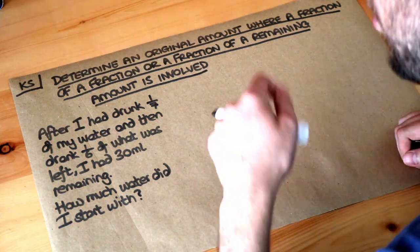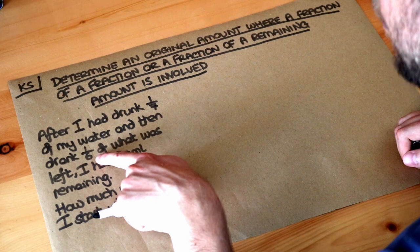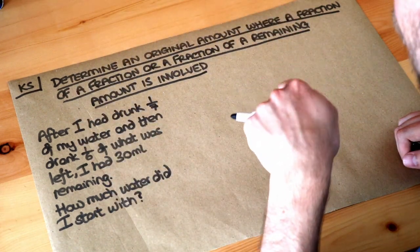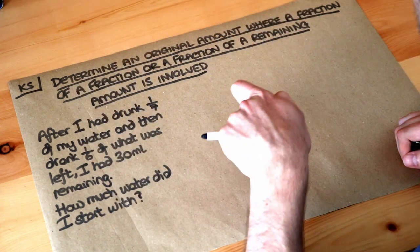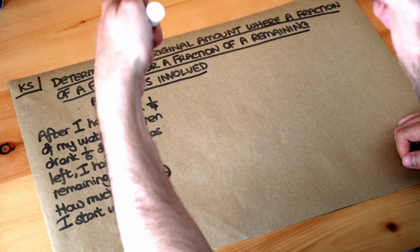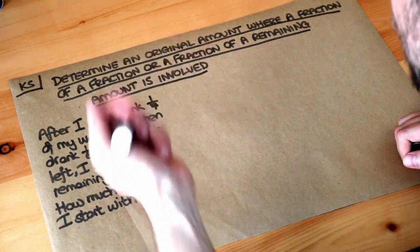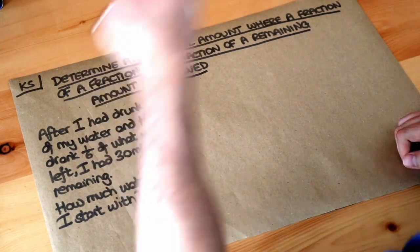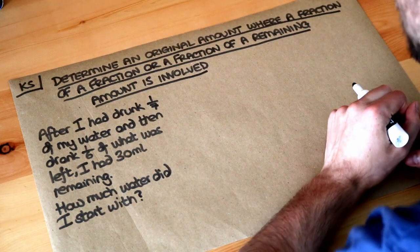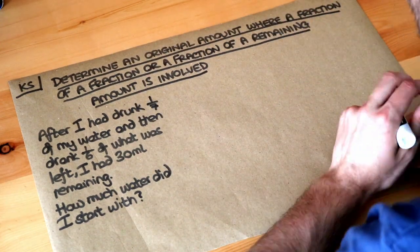There are two ways to do this. We could work backwards from the 30 millilitres: if we drank a sixth of what remained, we had five-sixths of the drink left, work out the total, then work back again since we drank a seventh leaving six-sevenths. But I'm going to do it all in one go by thinking about what fraction we have remaining at each point.